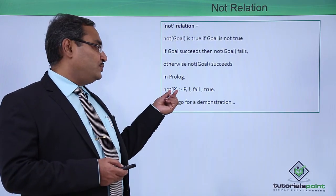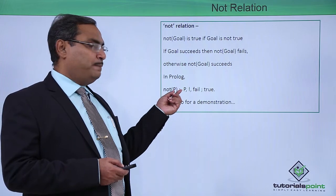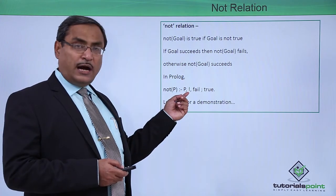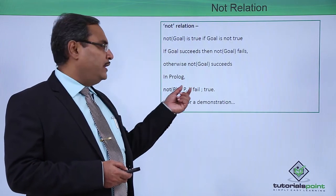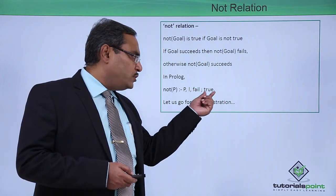If p is true, what will happen? We shall go for p and then cut and then fail. Otherwise, if p is false, then we will go for this or logic, so it will go for true.